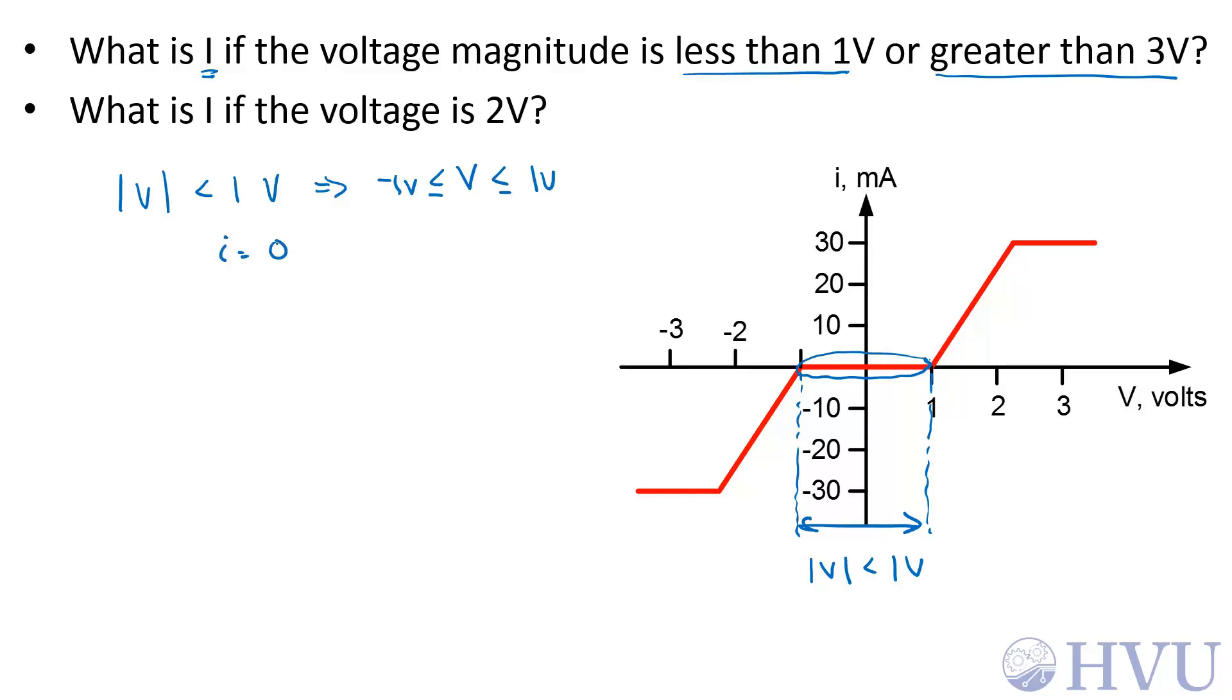If the magnitude of V is greater than 3 volts, that means V is greater than 3 volts or V is less than negative 3 volts. If V is greater than 3 volts, the current is up here, which looks like about 30 milliamps. So I equals 30 milliamps for V greater than 3 volts. And if V is less than negative 3 volts, I looks like about negative 30 milliamps.